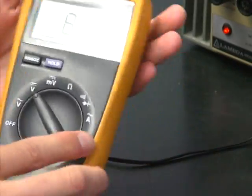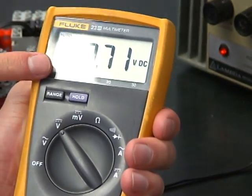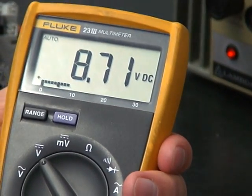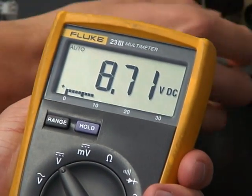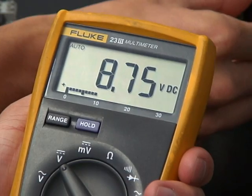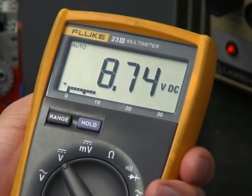So as you can see from the reading here, the voltage is 8.71, which is what we expected because we set this to about 9 volts. So if you want to adjust it a little bit, use the fine adjustment on there.